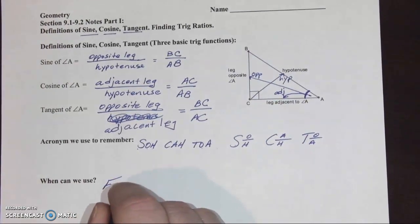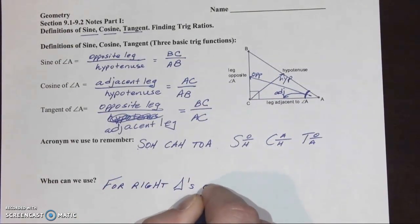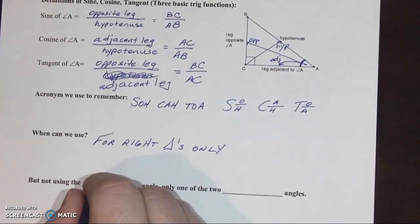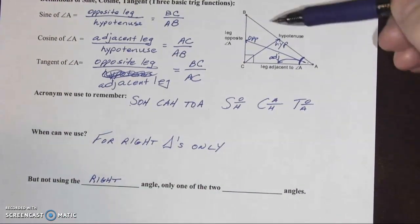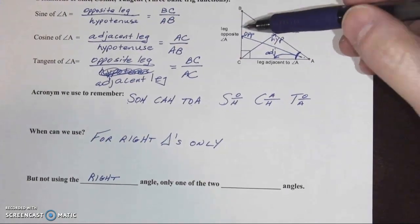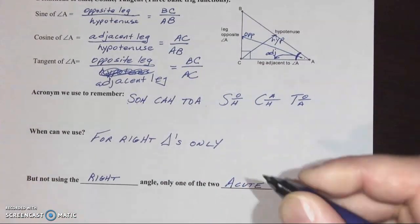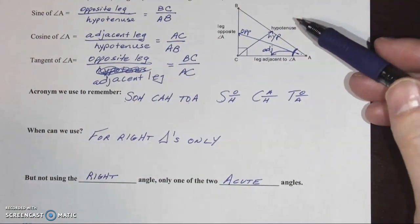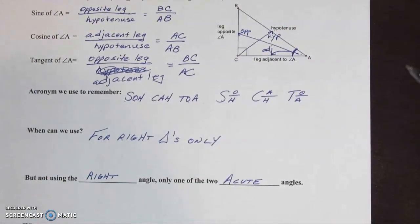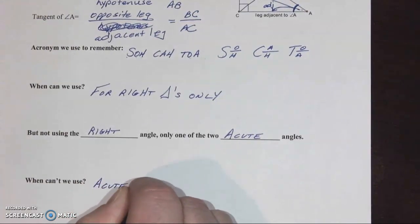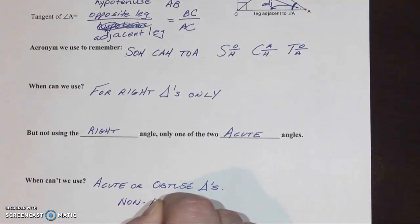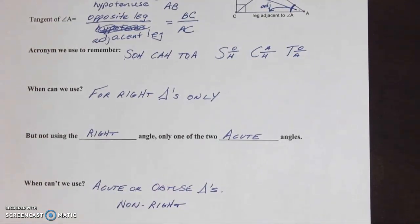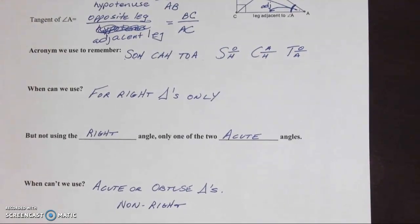We can use SOHCAHTOA for right triangles only. We will never use the right angle itself — we were working with angle A, which was not the right angle. We could also use angle B. Those would be the two acute, or non-right, angles in a right triangle. When can't we use it? Anything that is non-right — acute or obtuse triangles. We have other math for that, called the law of sines and law of cosines, which you'll see later in this unit or in a future course.